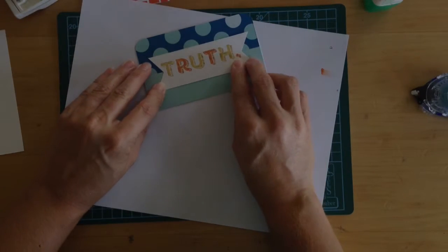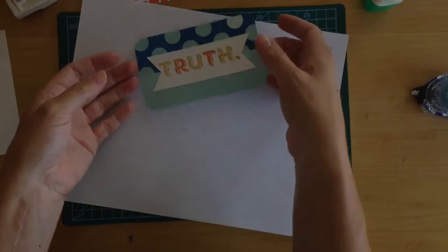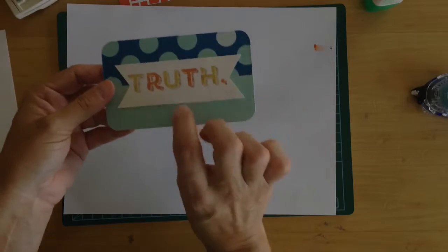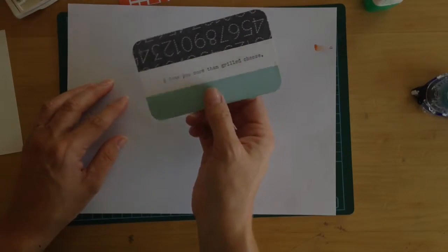If you're going to put it in a lunchbox, you could use your dimensionals, you could use the stapler, you could use a brad. There's lots of different things you could do to jazz it up. It's a real quick, simple note that says, 'truth, I love you more than grilled cheese.'